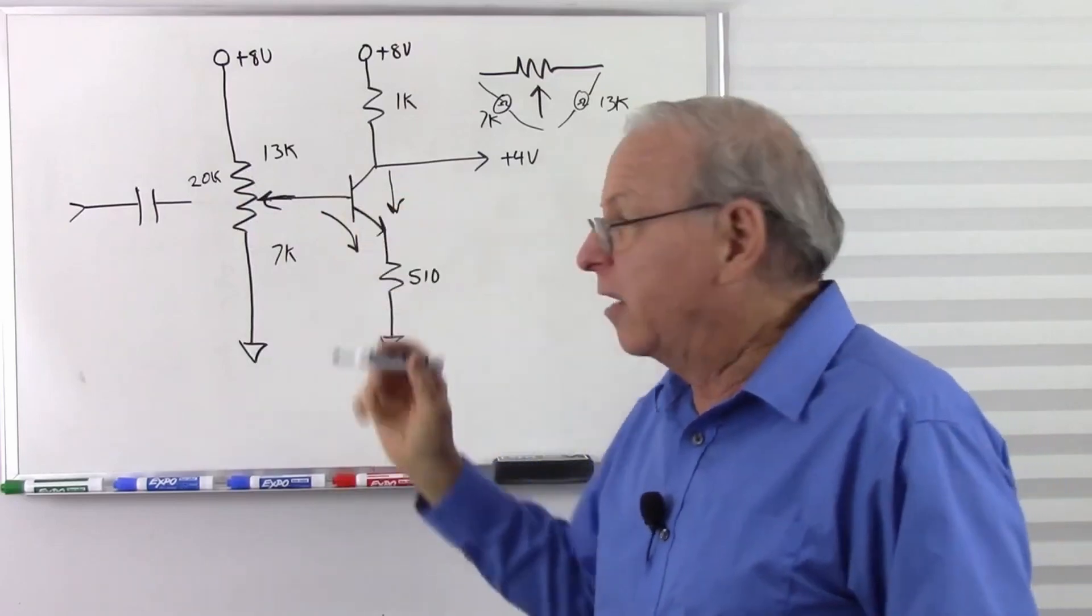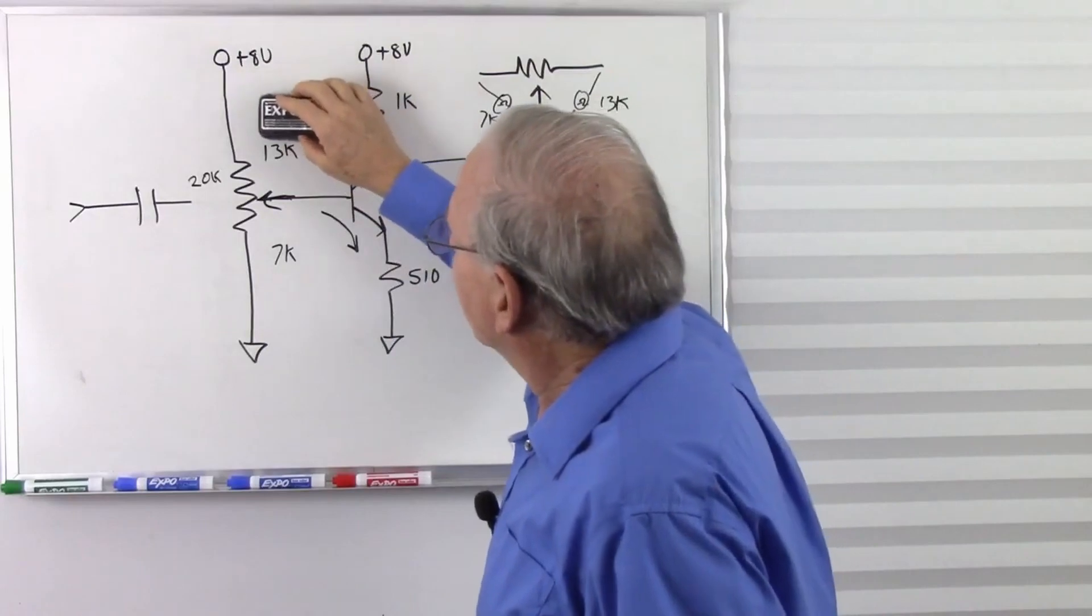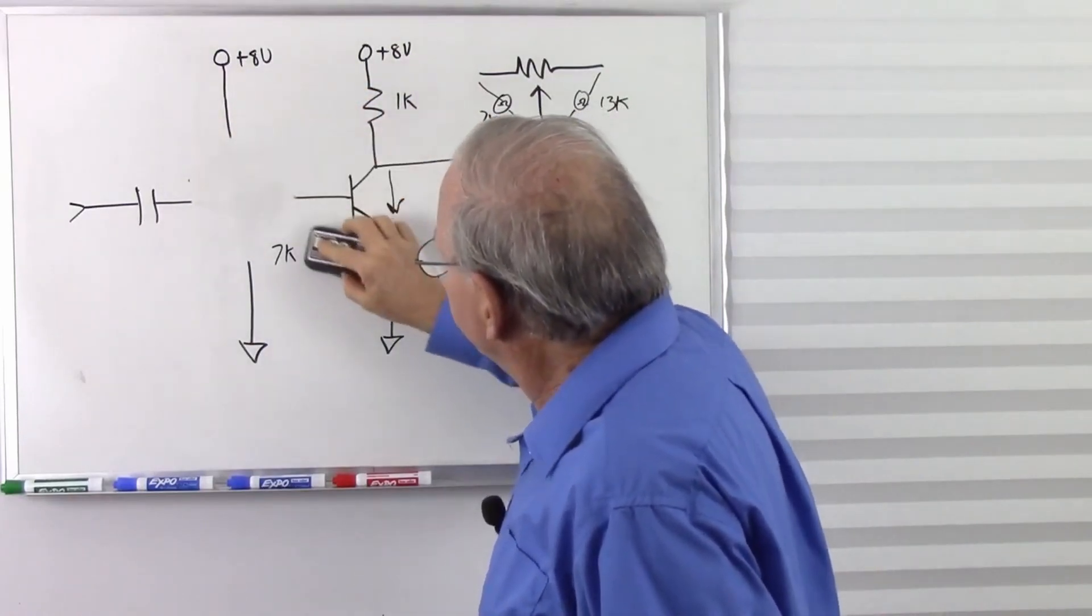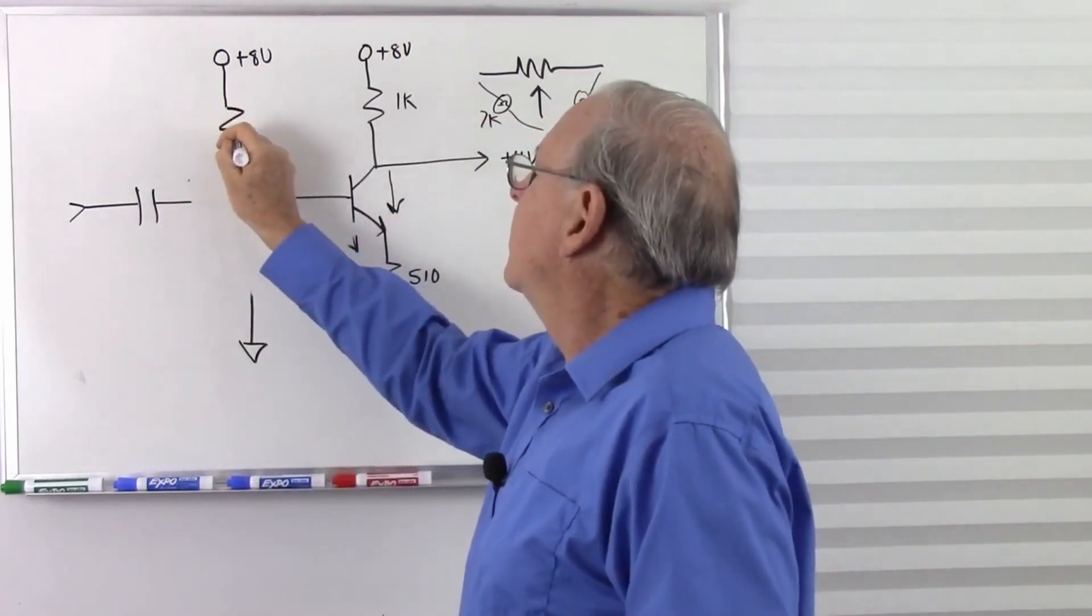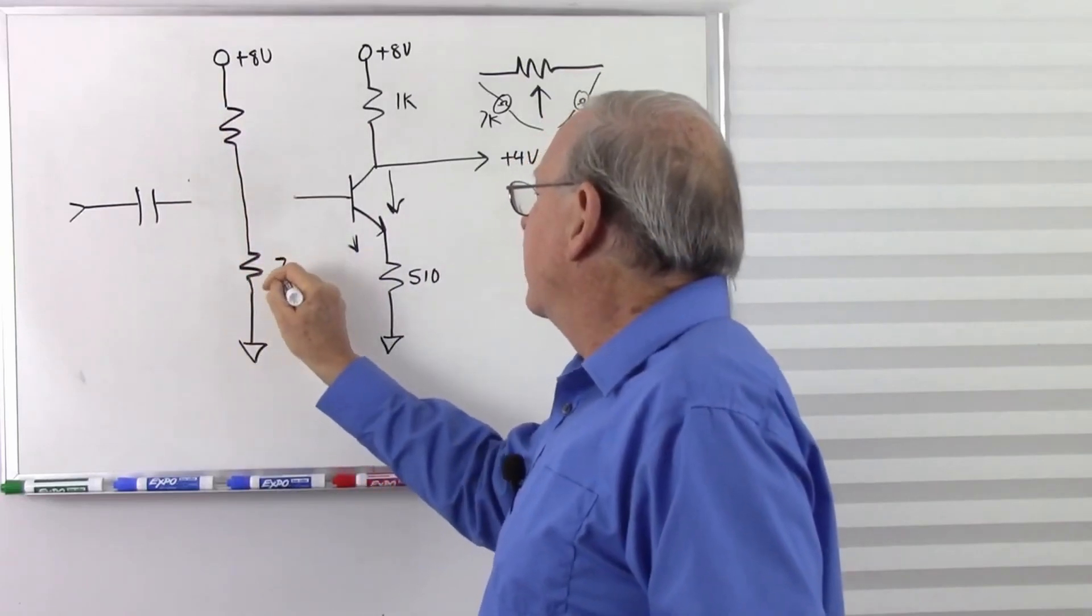So there's all my 20,000 ohms. So now I know if I want to put fixed resistors in this circuit, all I need to do is get those two values, so let's put them there.